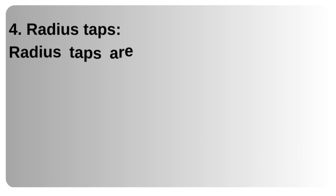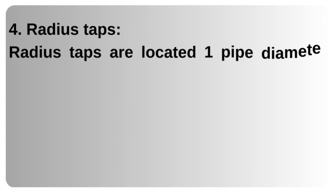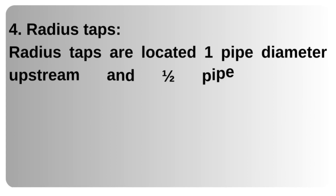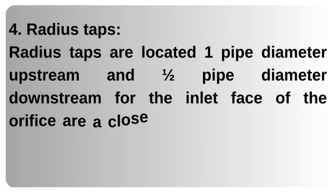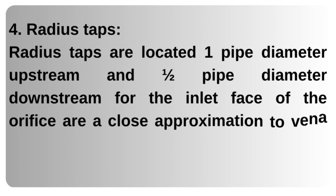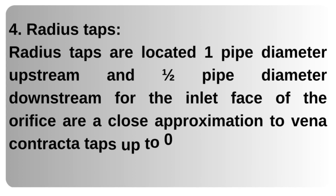4. Radius taps — located one pipe diameter upstream and a half pipe diameter downstream from the inlet face of the orifice. They are a close approximation to vena contracta taps up to 0.72 beta ratio.